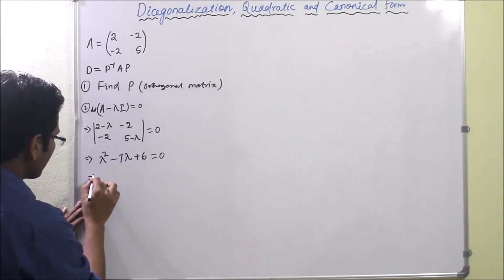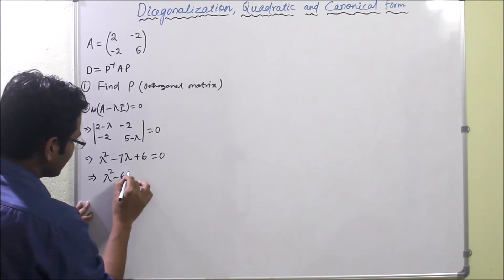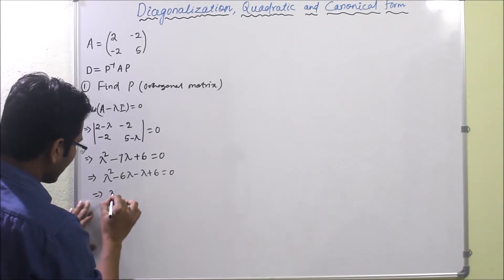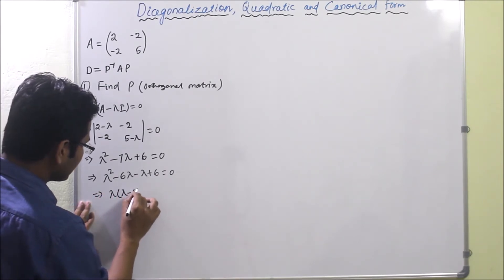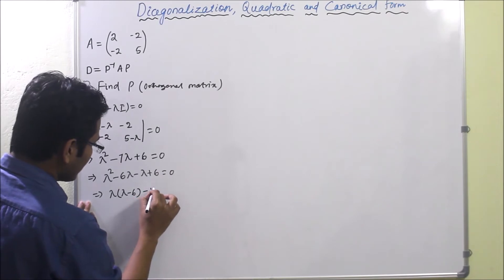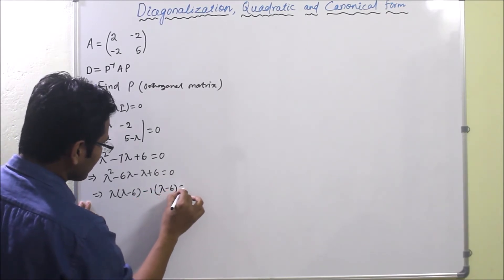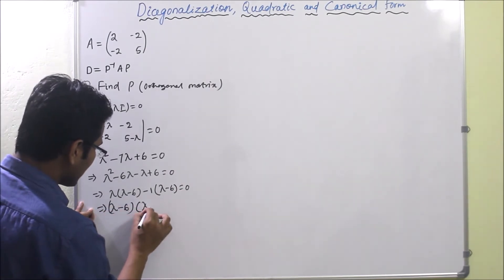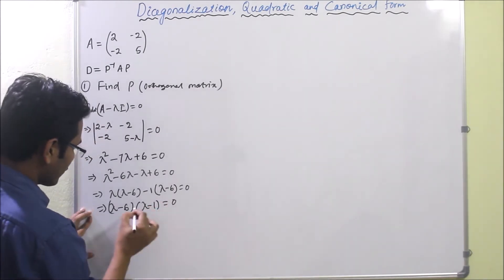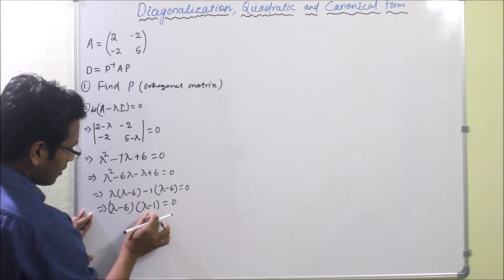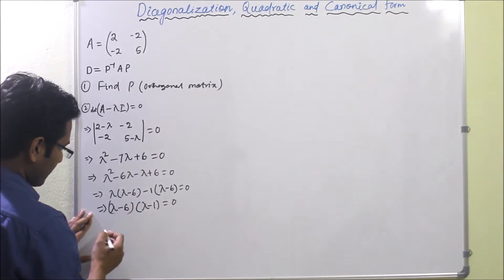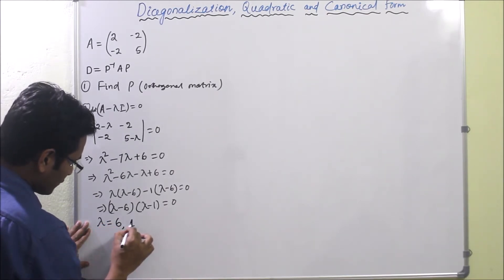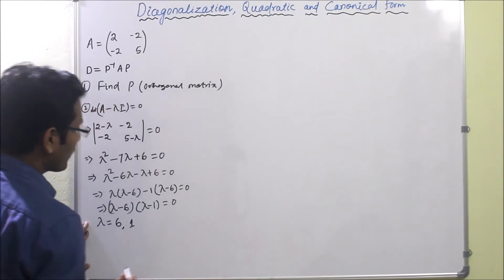Solving λ² − 7λ + 6 = 0, we rewrite it as λ² − 6λ − λ + 6 = 0, then factor: λ(λ − 6) − 1(λ − 6) = 0, giving (λ − 6)(λ − 1) = 0. So the two eigenvalues are λ = 6 and λ = 1.